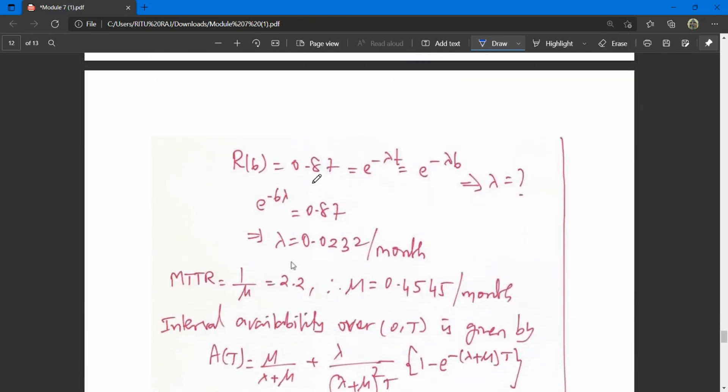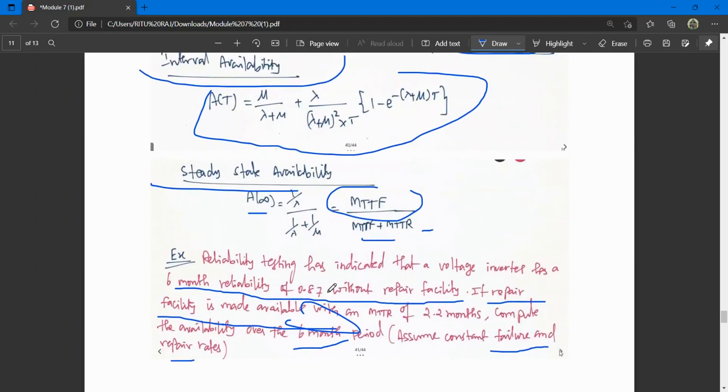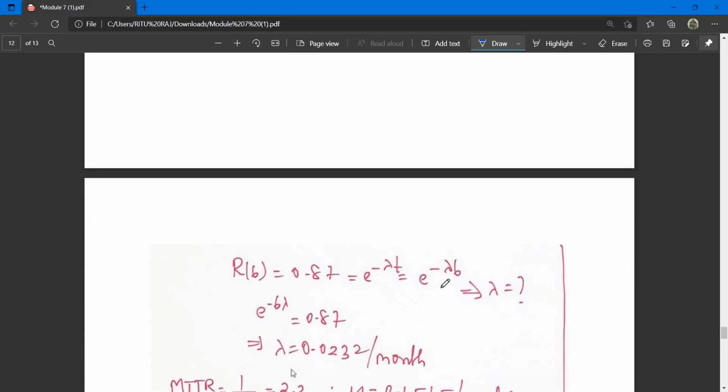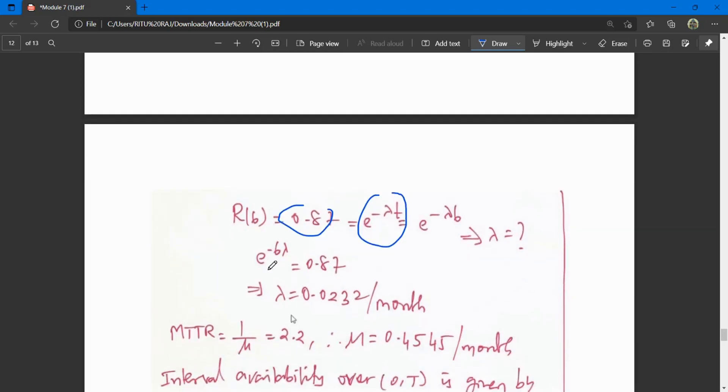R(6) is given as 0.87 for six months without repair facility. Since R(t) = e to the minus lambda t, we have e to the minus lambda times 6 equals 0.87. We swap LHS and RHS and solve to get lambda.